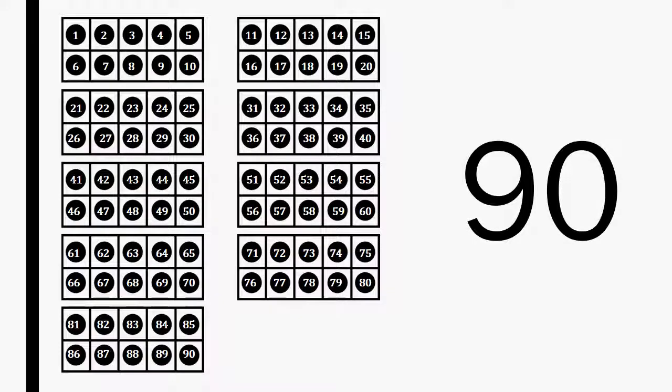These 9 ten frames show the number 90. Please point to the number 90. This is 90 tallies. 18 sets of tallies make the number 90. This is 90 tallies.